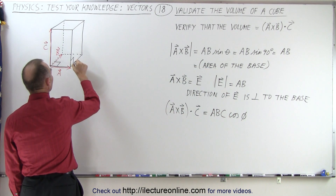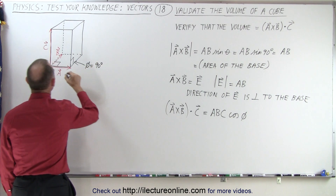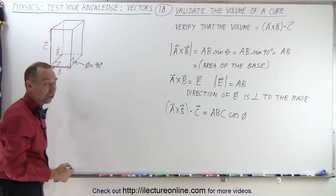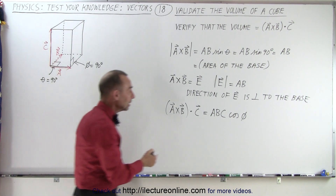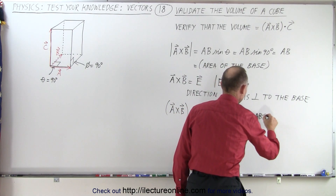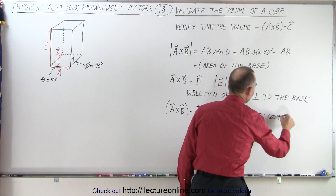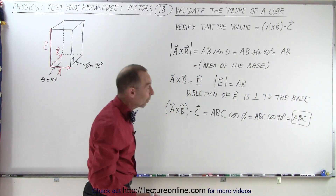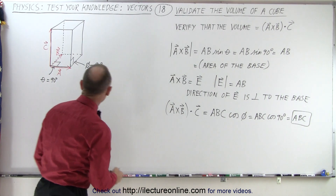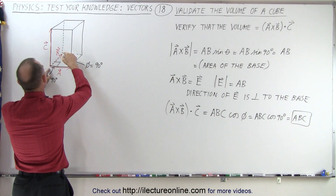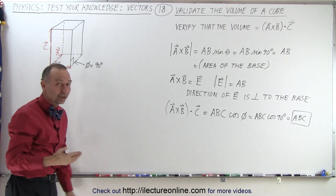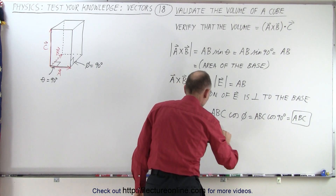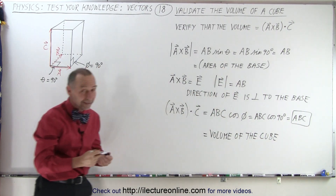The angle phi is this angle right here, which we know is also going to be 90 degrees, and theta is 90 degrees as well, again because it's a cube. The cosine of 90 degrees — so this is a times b times c times the cosine of 90 degrees — which is equal to a times b times c, because the cosine of 90 is one. And of course a times b times c is the magnitude of a times the magnitude of b times the magnitude of c. By definition the volume is length times width times height, so therefore this is equal to the volume of the cube. And that is how it's done.